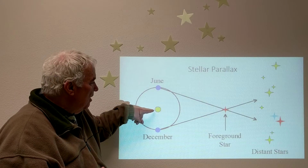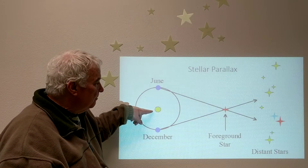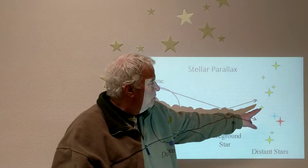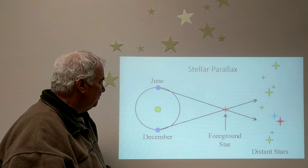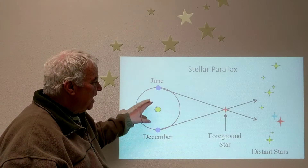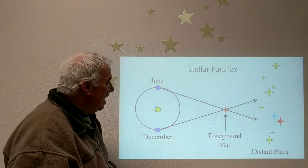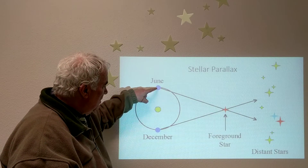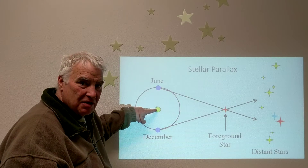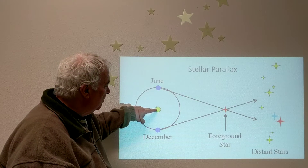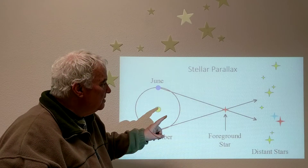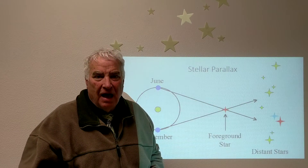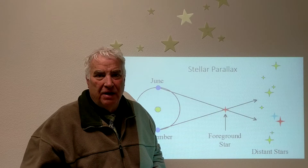So if we have the diagram showing the Sun and a star that's sort of nearby compared to much more distant stars — the scale of this is way out of scale, by the way — because the distance between the Earth and the Sun is one astronomical unit, one AU, and the distance to the nearest stars are hundreds of thousands of astronomical units away, just the very nearest stars.